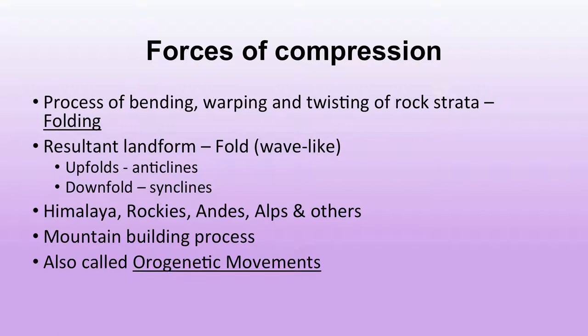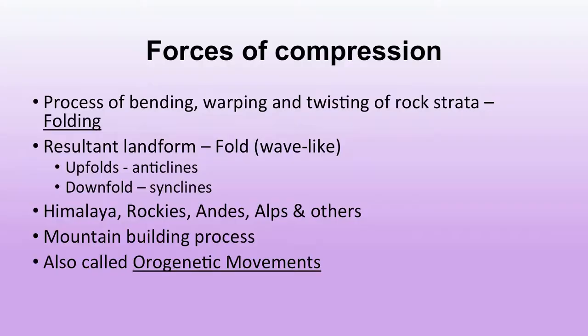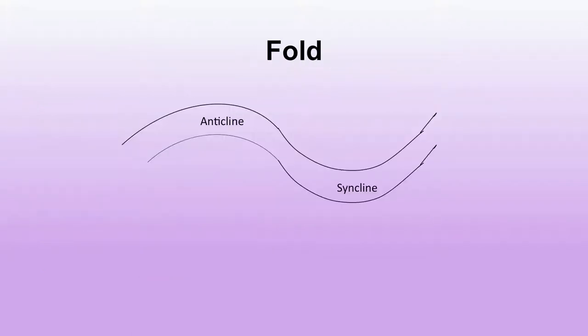A fold is a wave-like structure with up-folds and down-folds. The upward portion is known as anticline and the downward portion as syncline. Himalayas, Rockies, Andes, and Alps are examples of mountains formed out of this process. It helps in the mountain-building process and is therefore also known as orogenetic movement. In the picture you can see anticlines and synclines forming a wave-like fold structure.